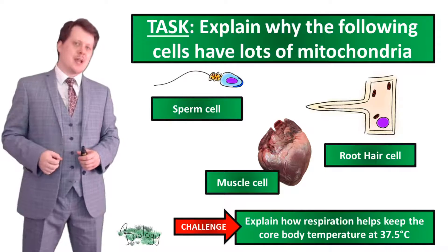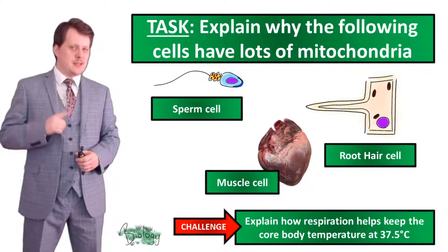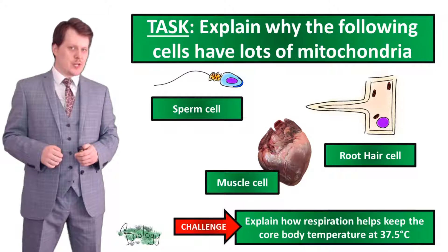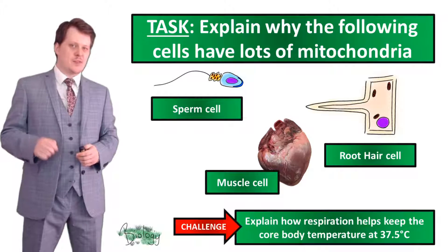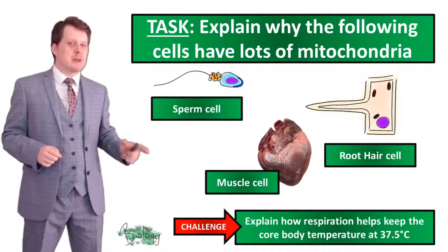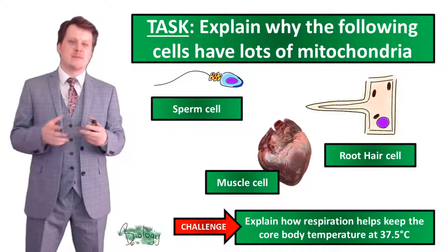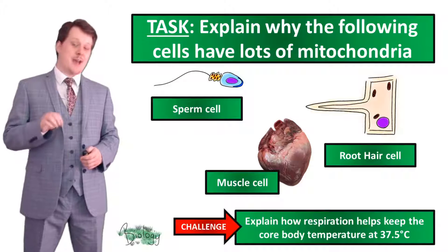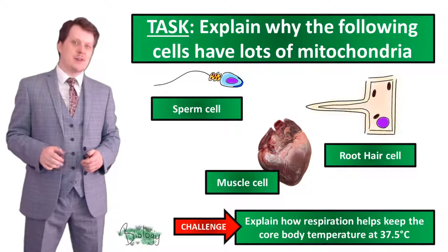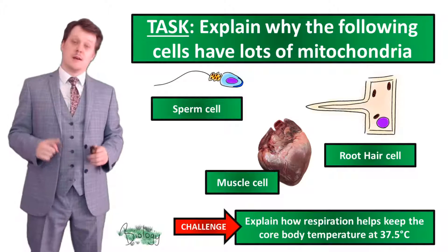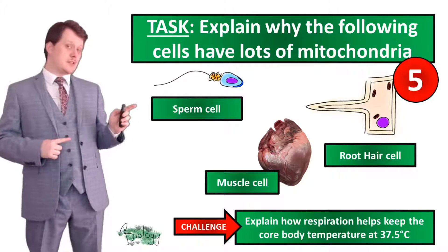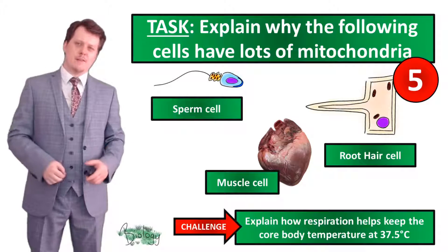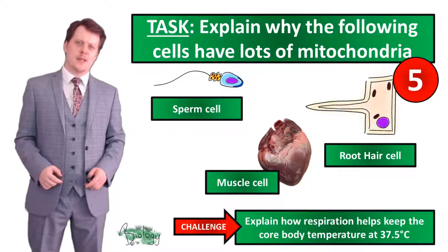For our next task, explain why these cells have a lot of mitochondria. And if you really want a challenge, explain how respiration helps keep the core body temperature at 37.5°C. Pause the video if you need more time, and when you're finished we'll go through the answers together.